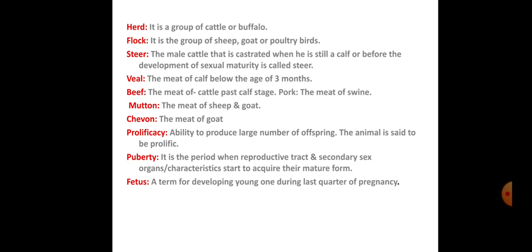Veal is the meat of a calf below the age of three months — it is called veal. Beef is the meat of cattle past the calf stage, above three months — it is called beef. Pork is the meat of swine or pig — it is called pork. Mutton is the meat of sheep and goat. Chevon is the meat of goat. Prolificacy is the ability to produce a large number of offspring. Puberty is the period when the reproductive tract, secondary sexual organs and characteristics start to be acquired in mature form. Fetus is the developing young one during the last quarter of pregnancy — it is called fetus.